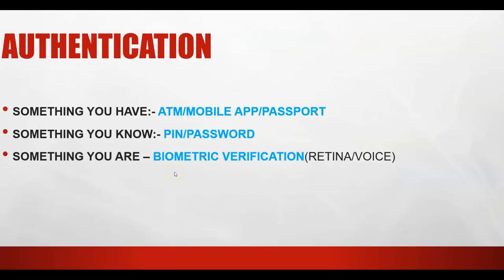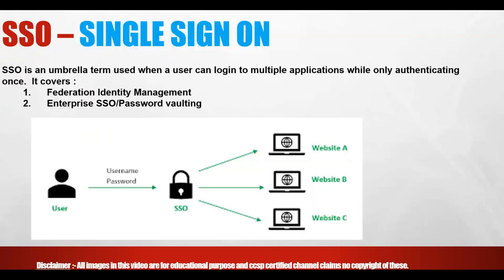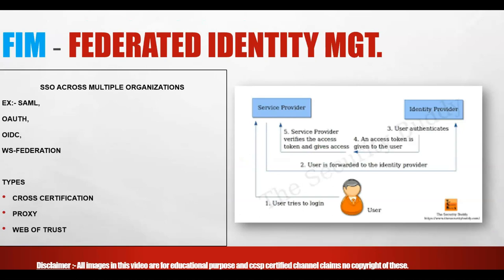We'll do a quick recap before coming to today's topic. We have seen that authentication has three parameters: something you know, something you have, and something you are. We also covered Single Sign-On, where a single credential can be used to access multiple applications — either enterprise SSO or Federated Identity Management (FIM).